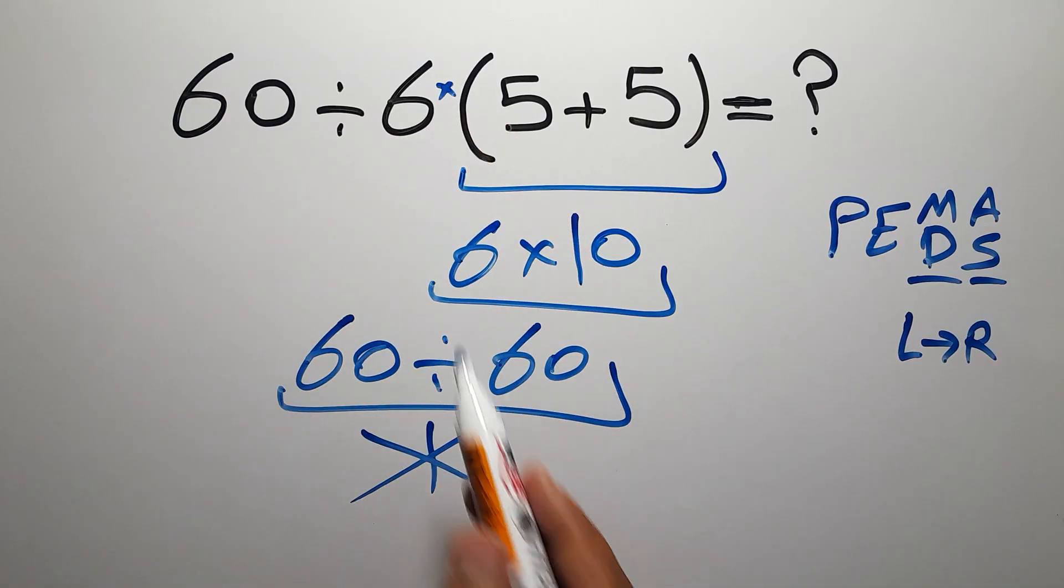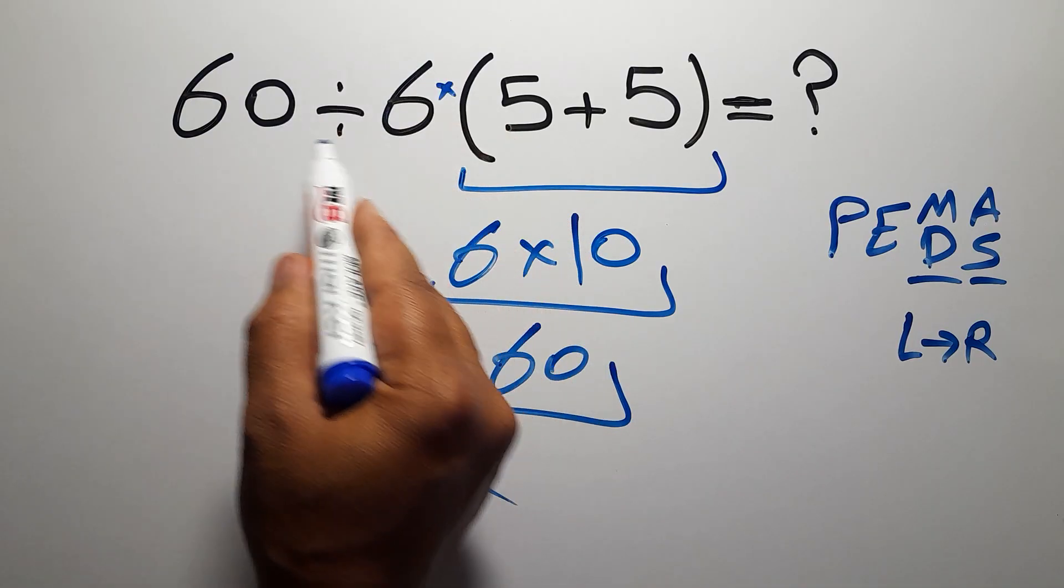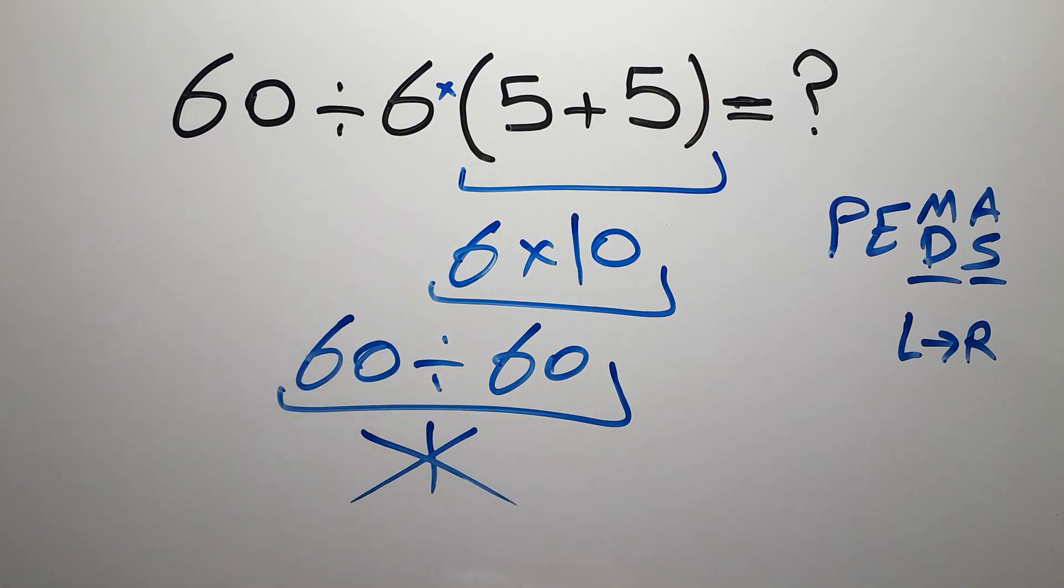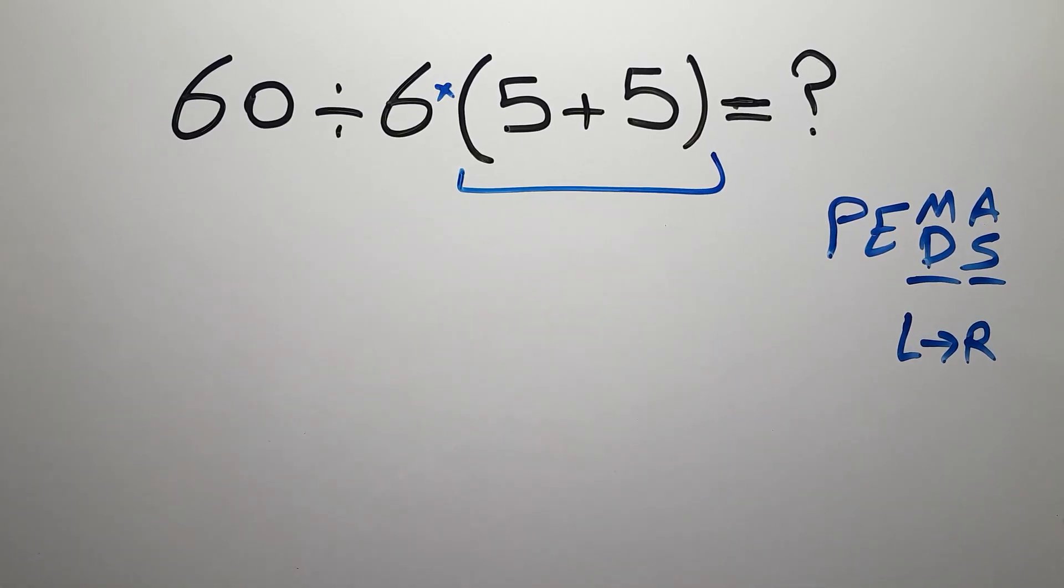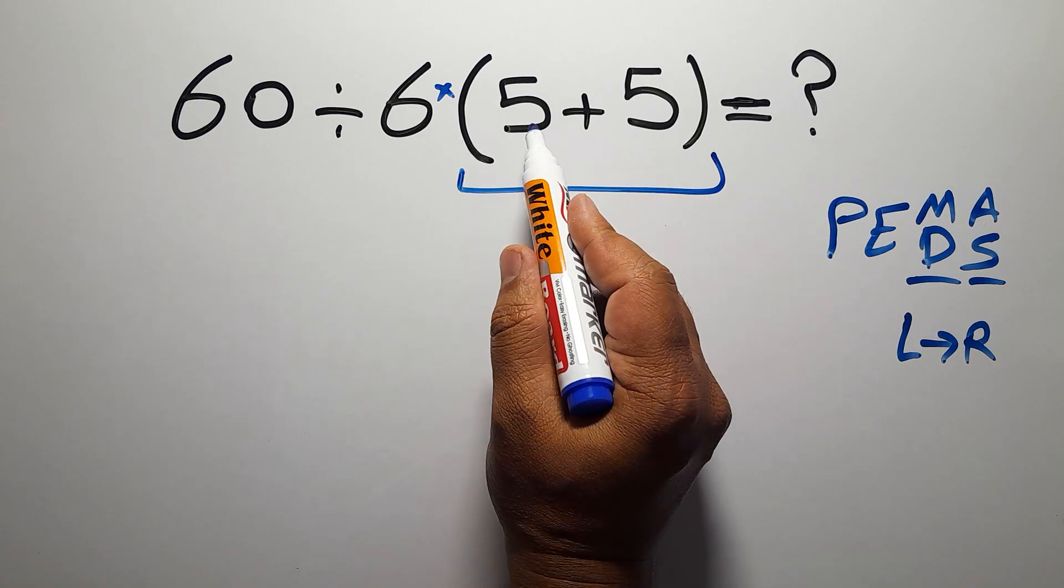Inside this parentheses we have 5 plus 5, which gives us 10. So 60 divided by 6, then times 10.